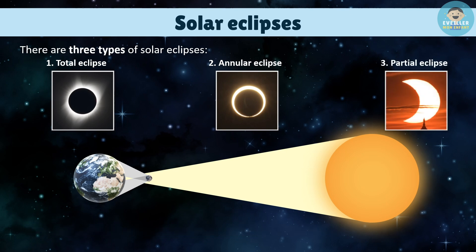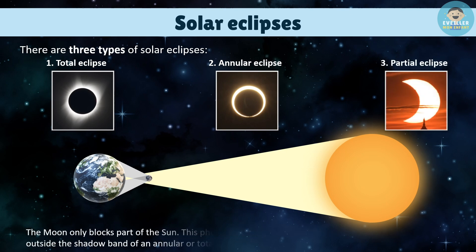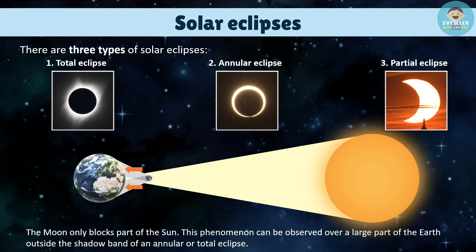Partial Eclipse: the Moon only blocks part of the Sun. This phenomenon can be observed over a large part of the Earth, outside the shadow band of an annular or total eclipse.